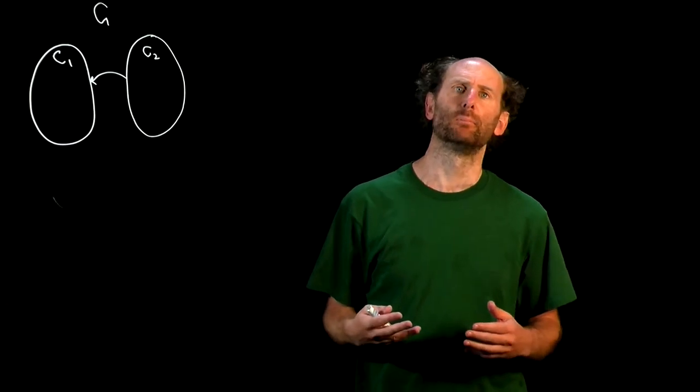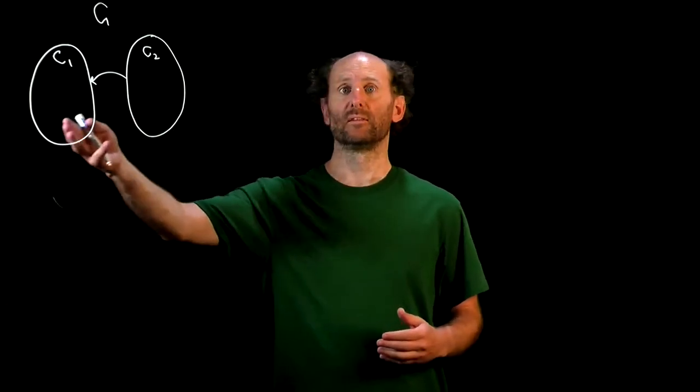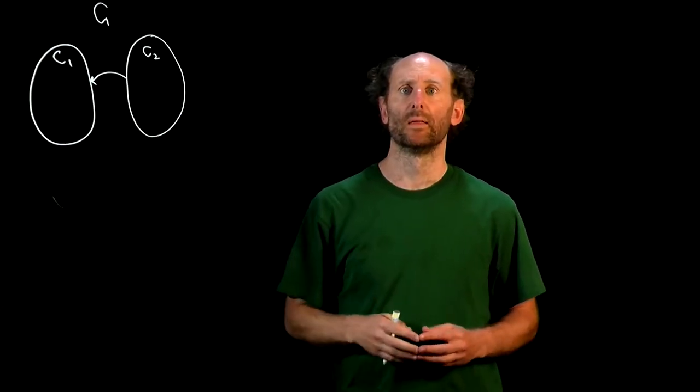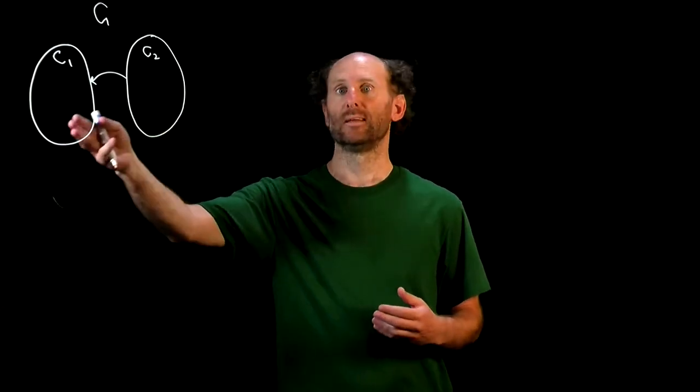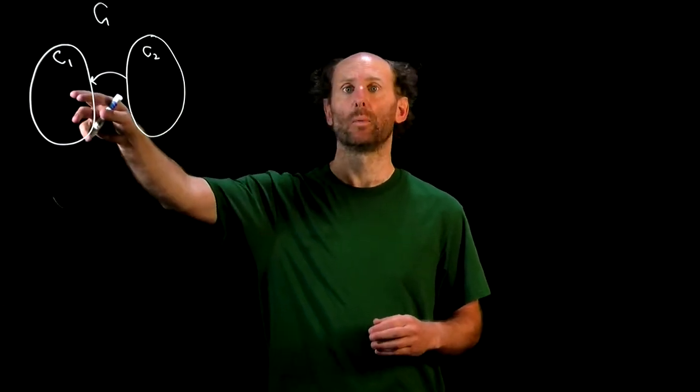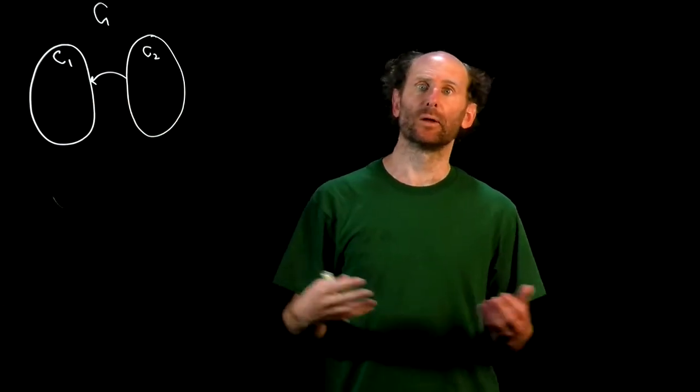This means that there are strong components C1 and C2, such that it's possible to get from C2 to C1 but not from C1 back to C2. That is, any arcs between C2 and C1 solely point from C2 to C1 and there are none going in the other direction.